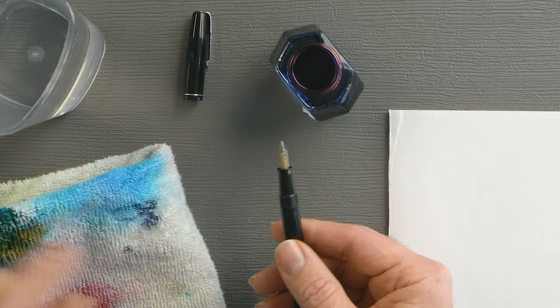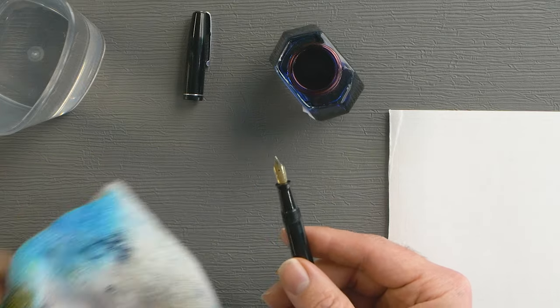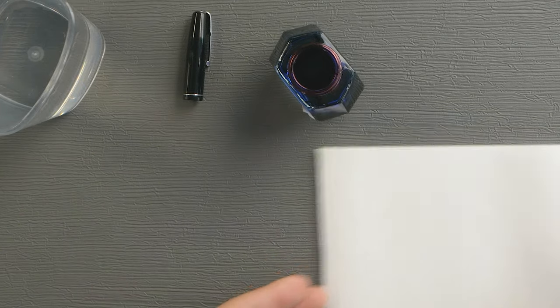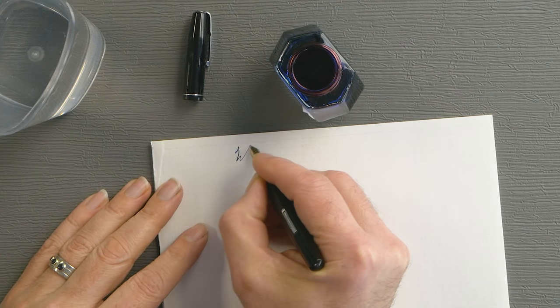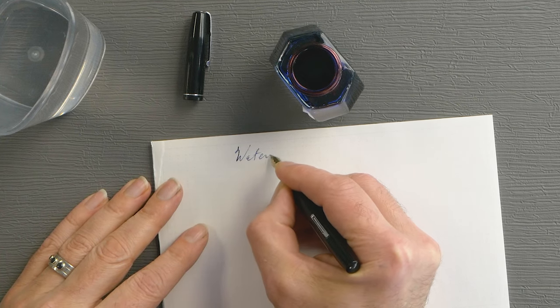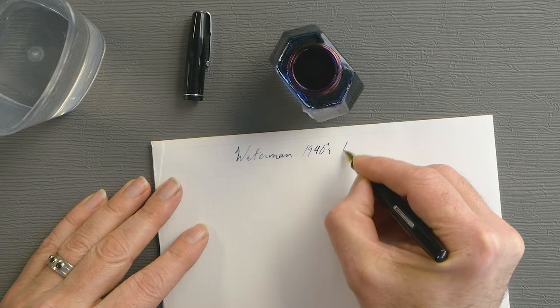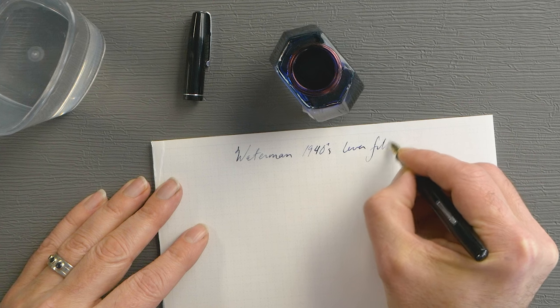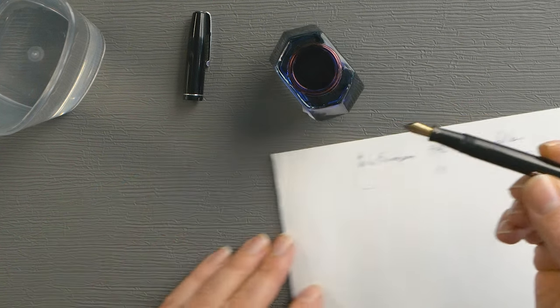And just gently wipe off the section so your fingers don't get ink on it. A little bit on the nib. And you may occasionally get some ink coming out of the slit. So it's not entirely possible to get all that out sometimes. This one writes pretty nice.